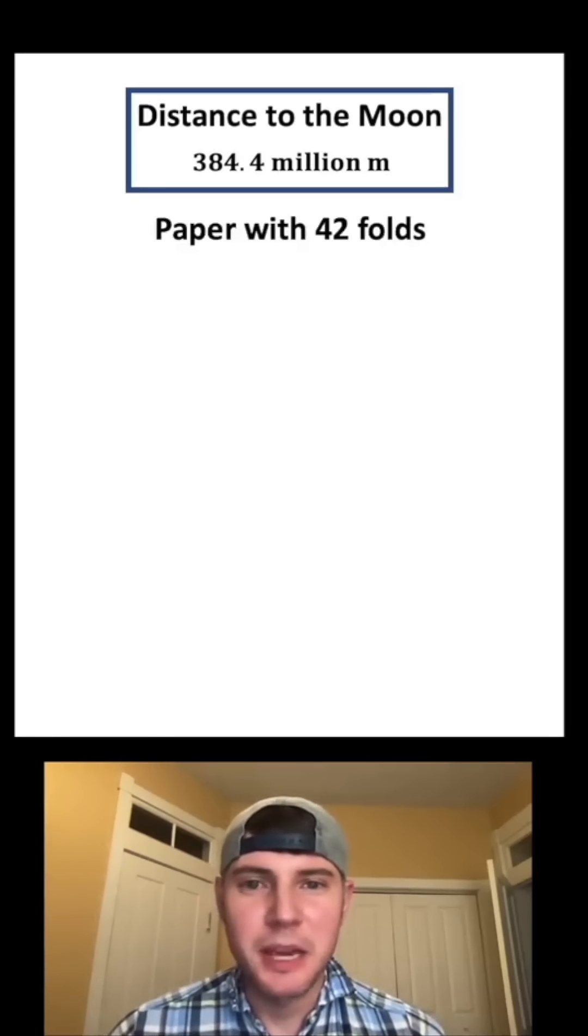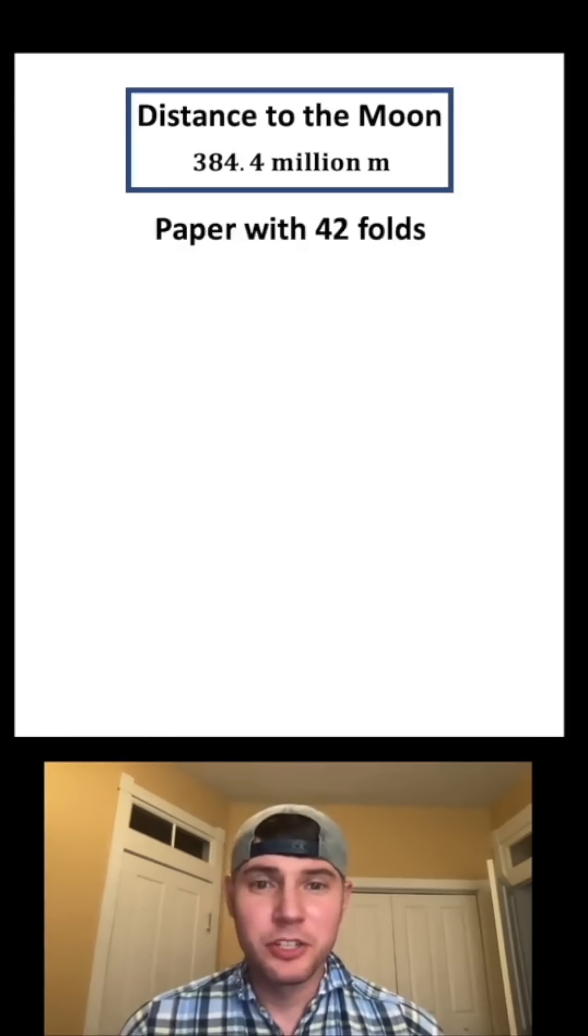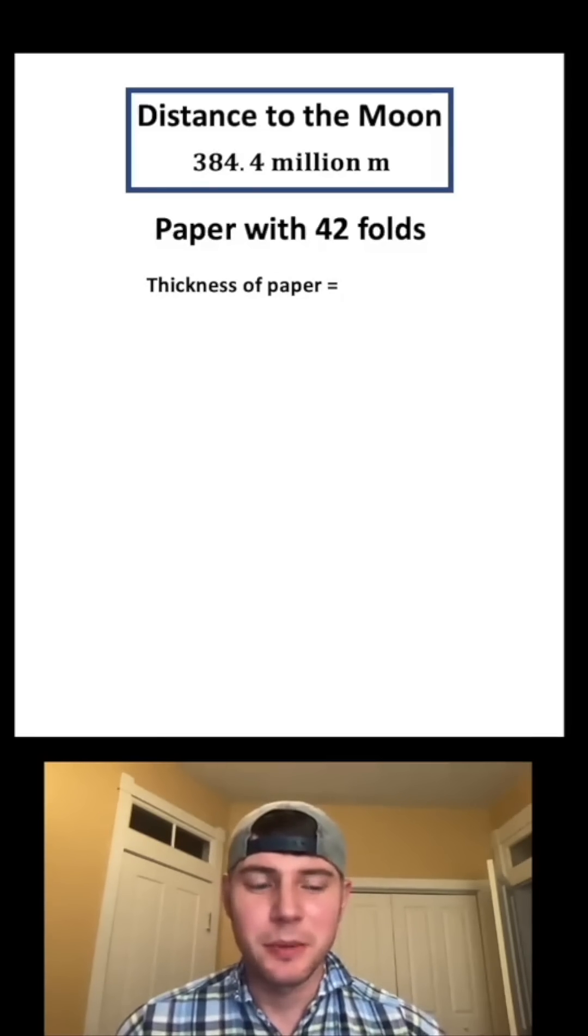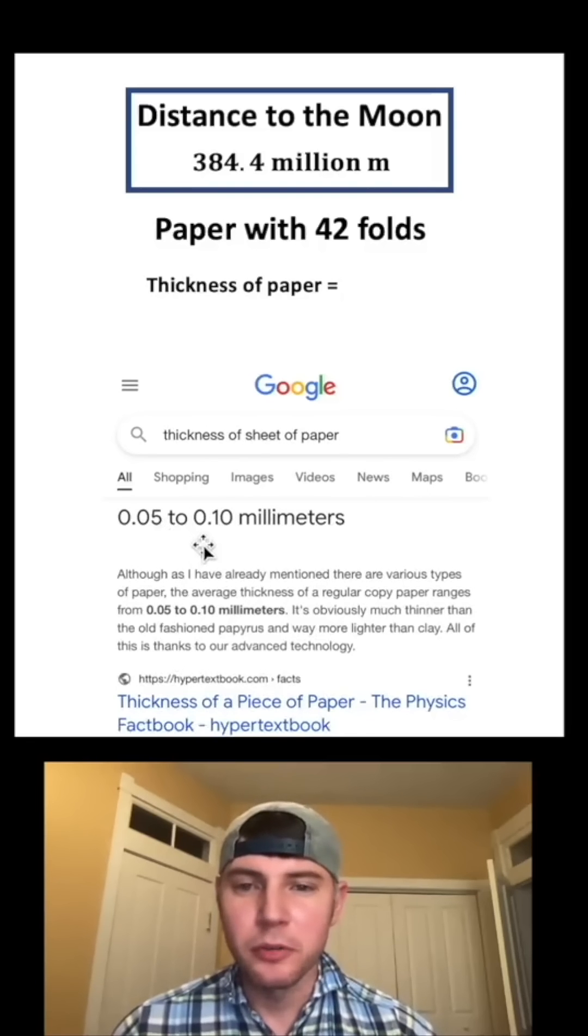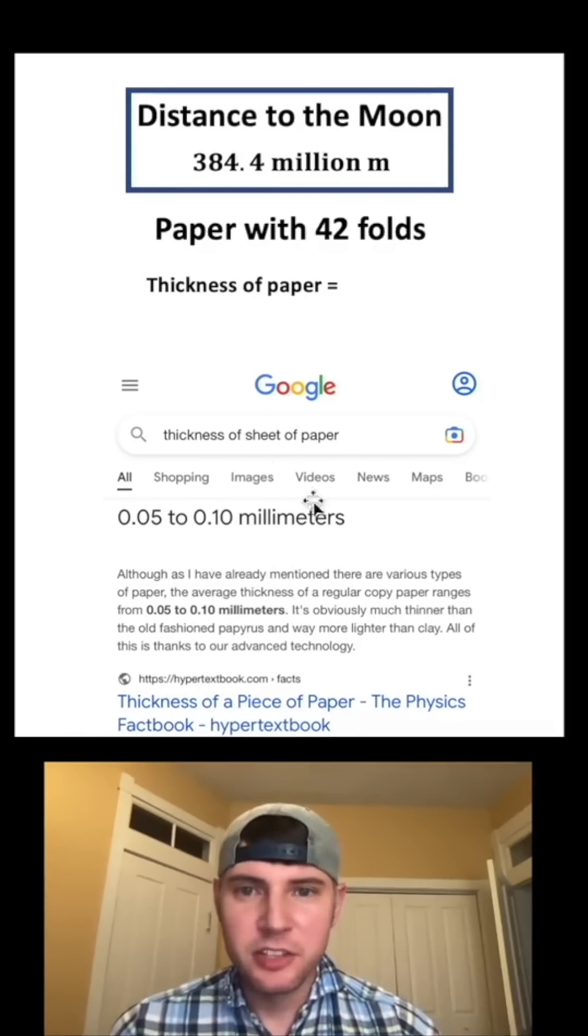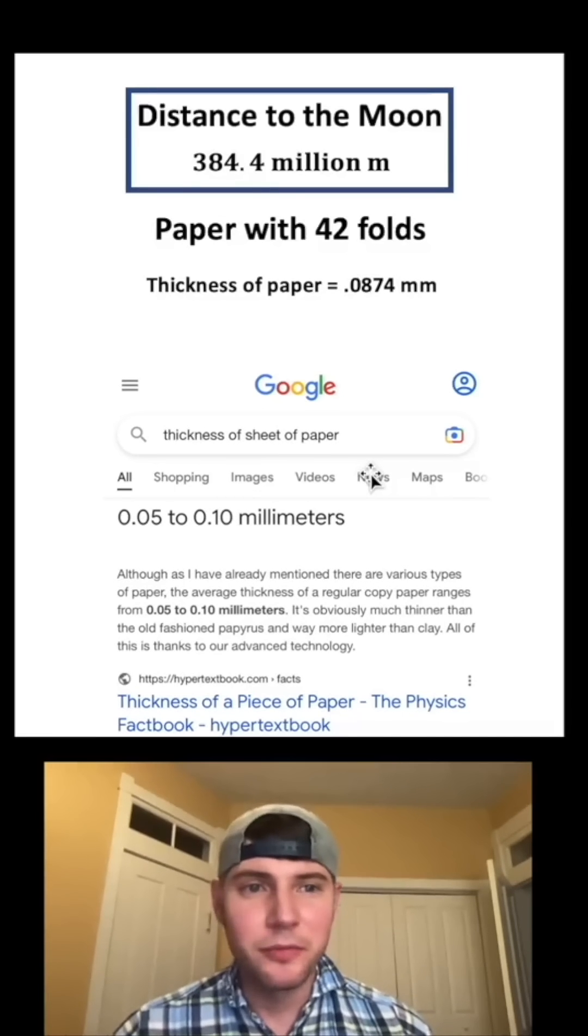Next, we gotta find the thickness of a piece of paper with 42 folds. First off, what is the thickness of a single piece of paper? If we Google that, it says 0.05 to 0.1 millimeters. So it's somewhere in this range. I will go with 0.0874 millimeters.